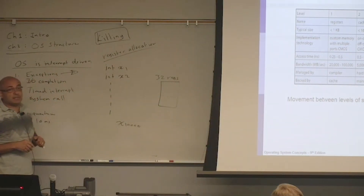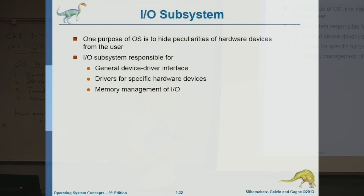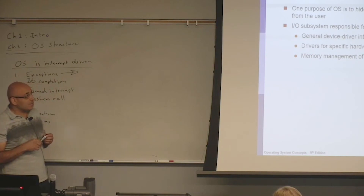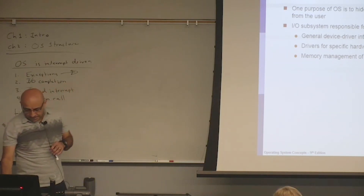Register allocation is not an operating systems topic. The IO subsystem: we will talk about IO and how the operating system tries to overlap CPU execution with IO requests, but unfortunately in this course we will not cover the internals of IO devices. We will understand the interface — how the operating system interacts with an IO device — but we will not study the IO subsystem itself.